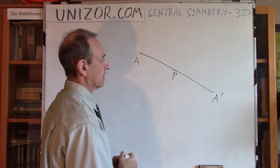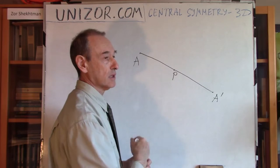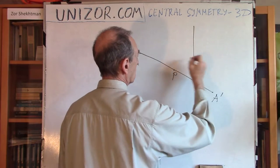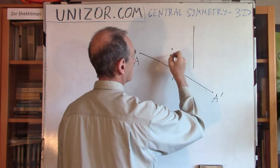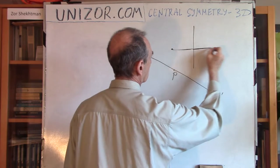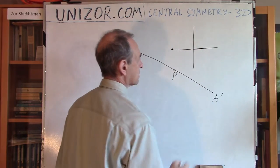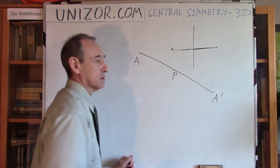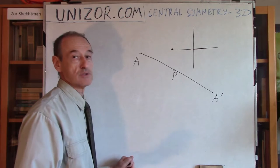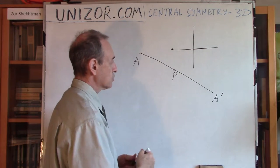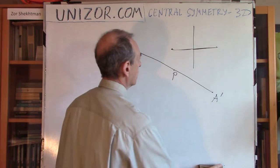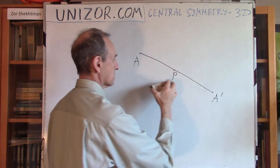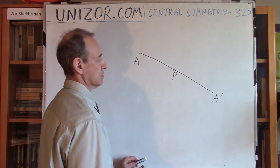Another type is a reflection relative to some kind of axis. If you have a point, you drop a perpendicular and extend it by the same length. We will not discuss this today in three-dimensional space. What we will discuss is central symmetry.